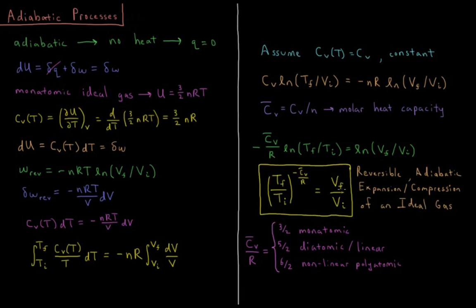Note that in isothermal processes, temperature is constant and we add whatever heat is needed to cancel out the work being done. Here we have no heat, so that work isn't getting canceled out. Our energy is changing, and thus our temperature is changing — and that temperature change we can determine from how the volume changes and what the heat capacity of our system is.